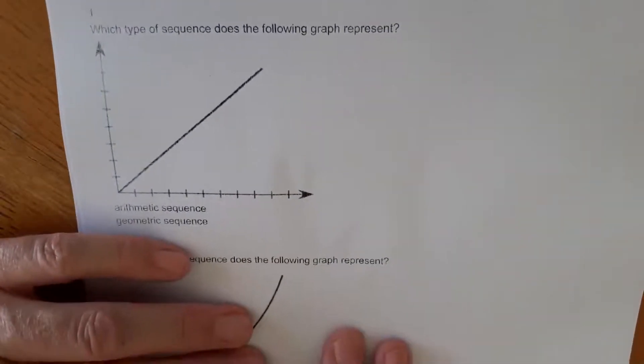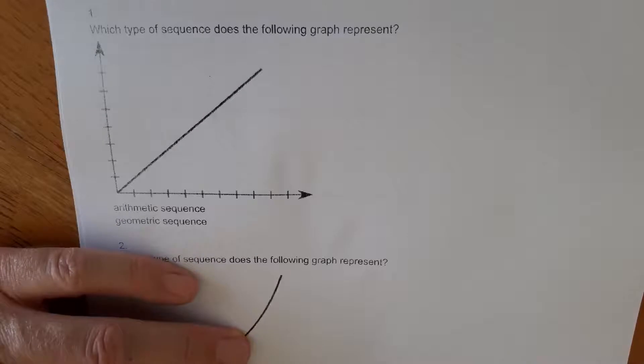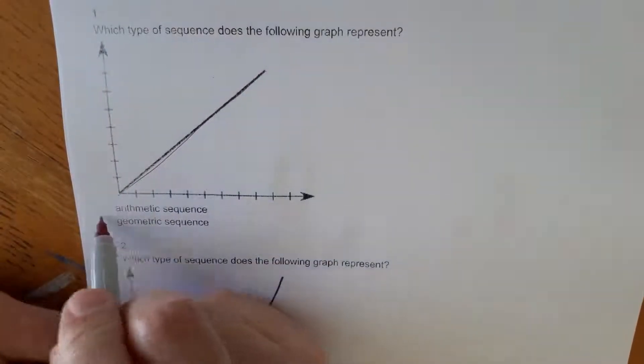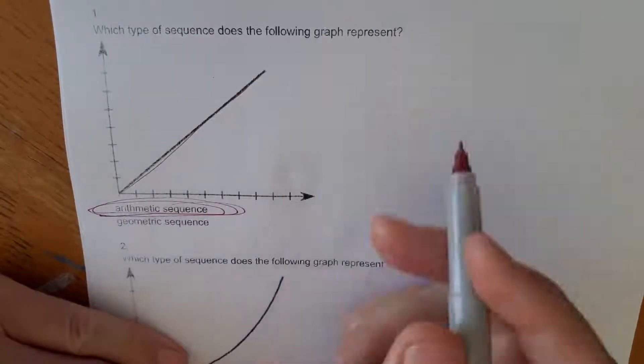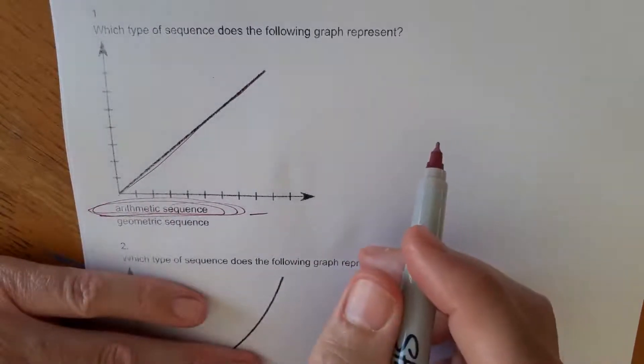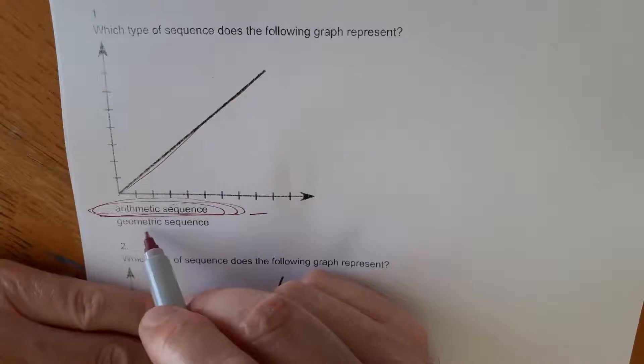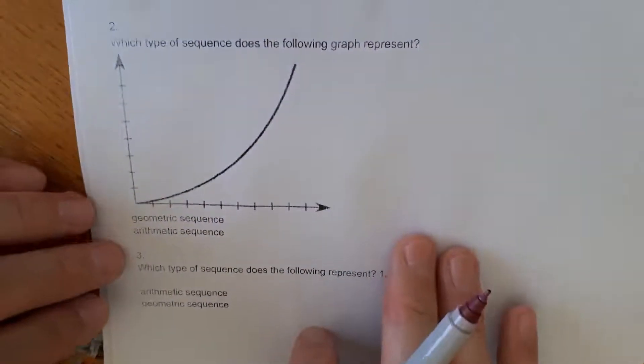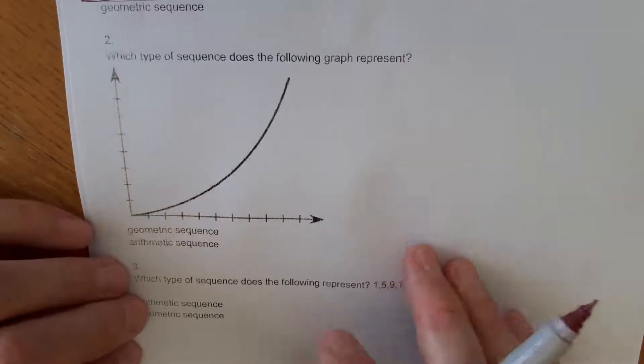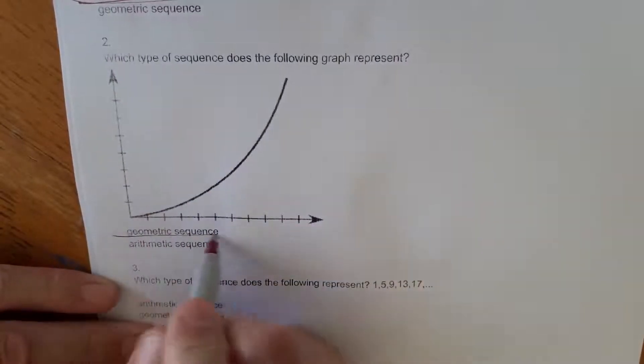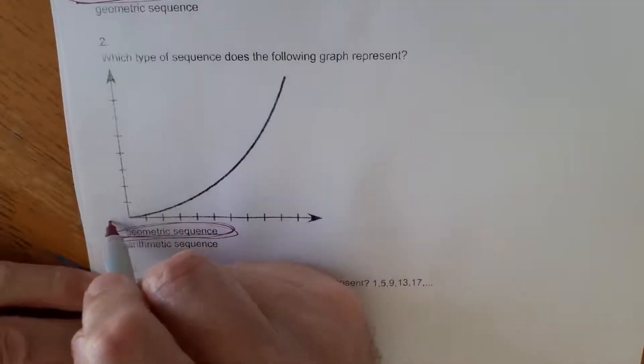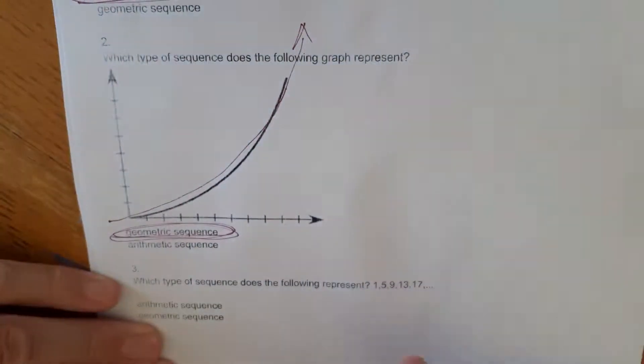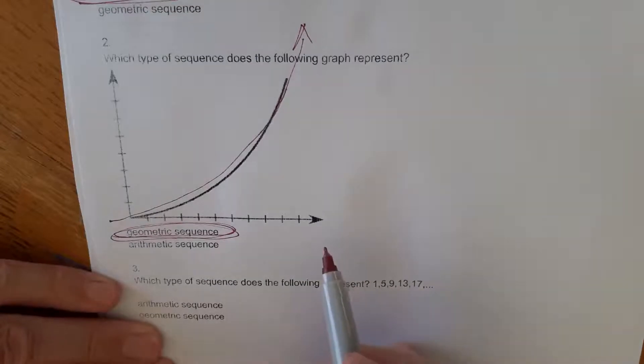Which type of sequence does the following graph represent? This is a line, so it's an arithmetic sequence, all right? And what we're going for here is the idea between arithmetic and geometric. Arithmetic is a line. The next one is an accelerating sequence where it expands, also known as a geometric sequence, all right? So this would be as in an exponential curve, which increases as it moves. So it's an acceleration.